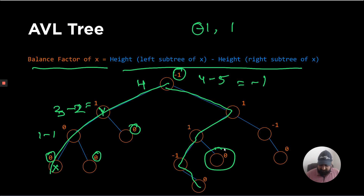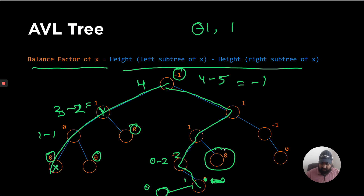If we try to insert a new node, the balance factor changes. For one node it becomes 1 minus 0 which is 1, and for another it becomes 0 minus 2 which is now -2. At that point the tree is no longer a valid AVL tree.